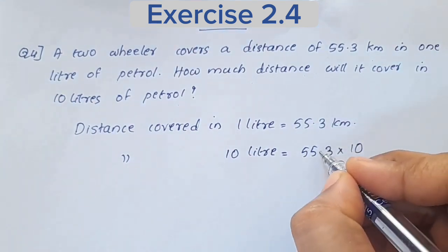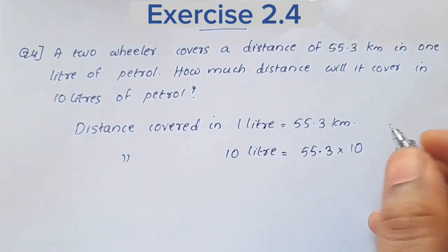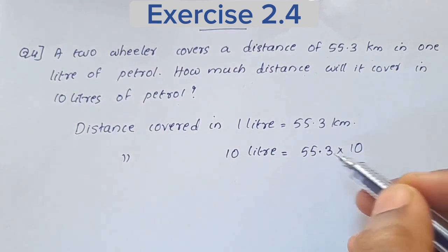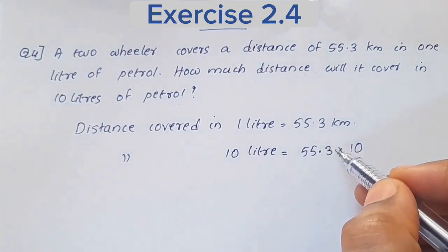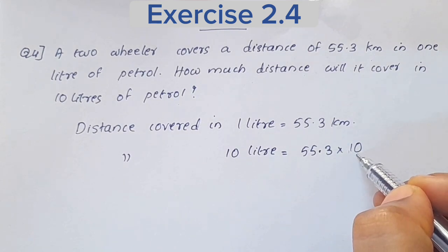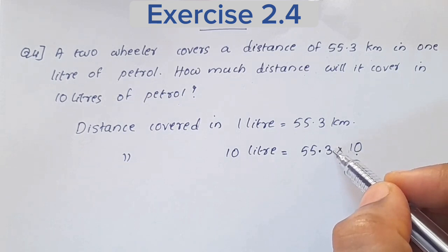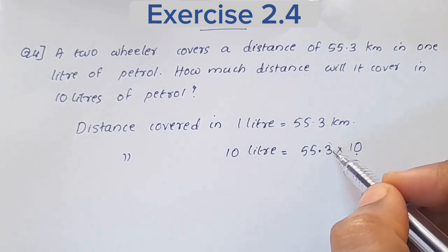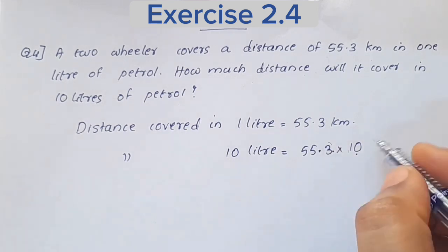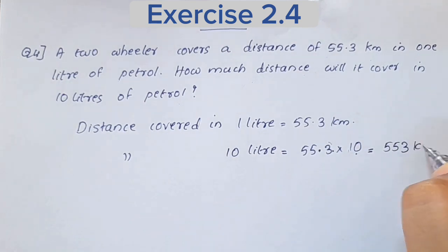When you multiply by 10, you move the decimal point one place to the right. So 55.3 into 10 gives us 553 km.